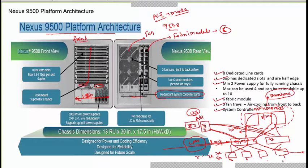In ACI mode, the spine acts as the backbone and the leaf switches act like distribution switches. Spine switches can be the 9504, 9508, or 9516 modular switches. The line cards in spine switches must be ACI-enabled with an ACI spine engine chip. For leaf switches, the line card ASIC will be an ACI leaf engine — that's what distinguishes the leaf from the spine.